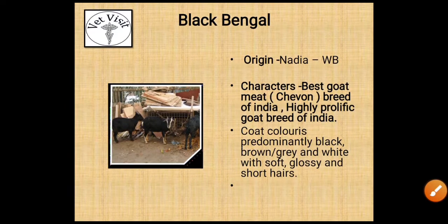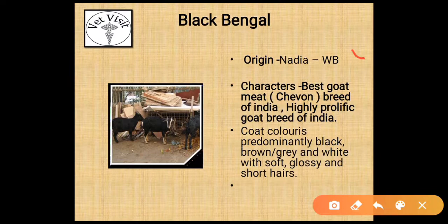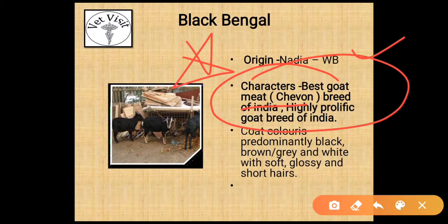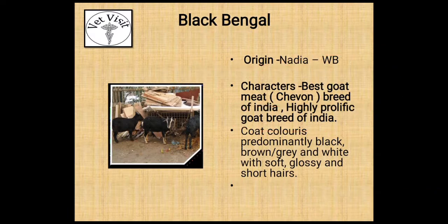The next breed is Black Bengal. Its origin is Nadia, West Bengal. Characters: it has the best goat meat — called Chevon — and is the highly prolific goat breed of India — mark this as star. 'Prolific' means having high production. Coat color is predominantly black, brown, grey, and white with soft, glossy, and short hair.